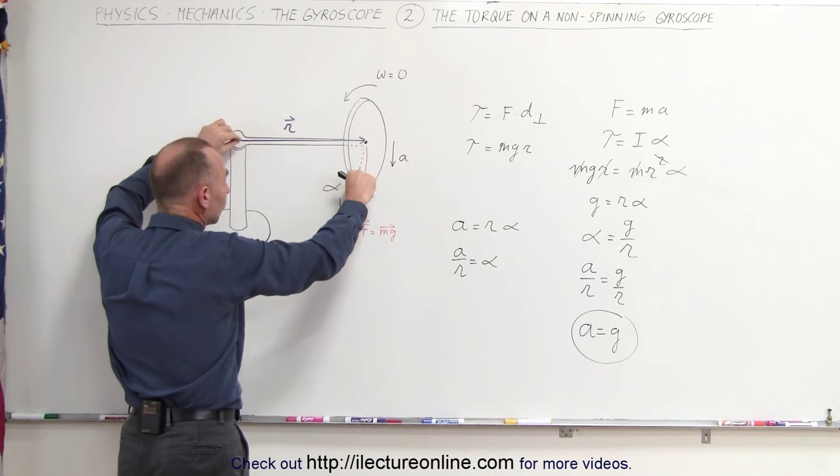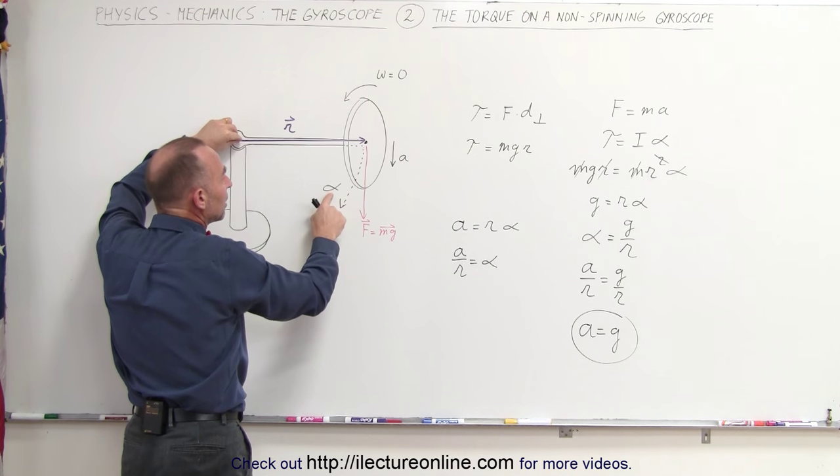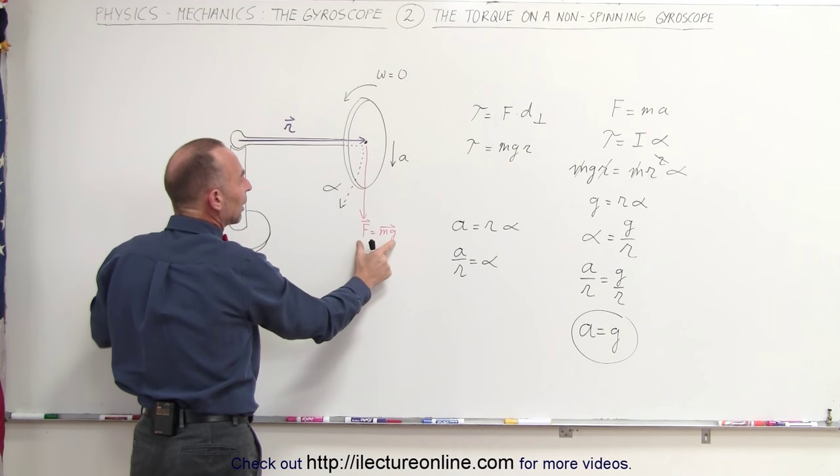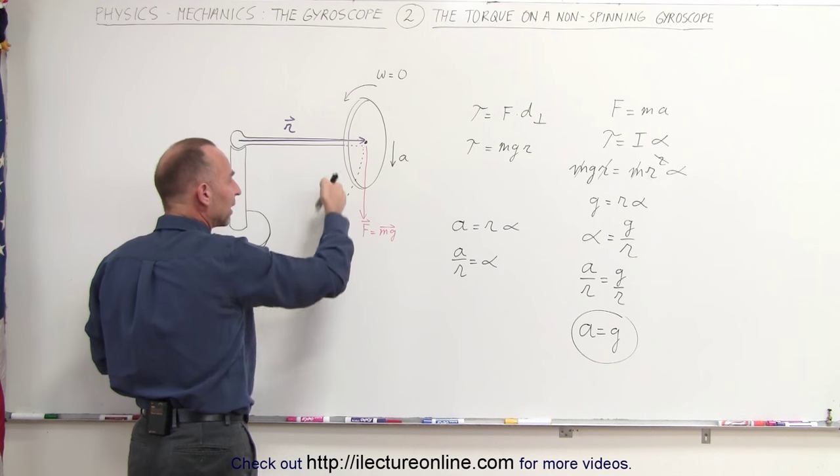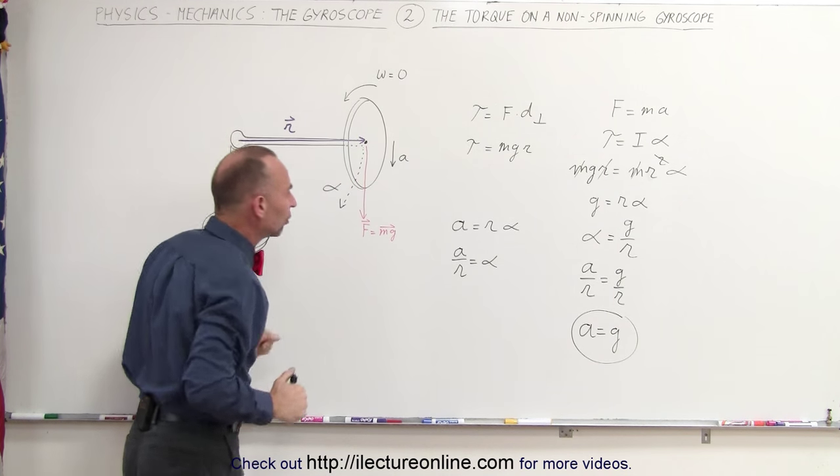as the gyroscope begins to spin around, because it's locked in right here, then the acceleration would indeed be relative to the alpha which would change. It would not stay a constant alpha, and that would depend upon the force acting in this way and then the distance from here to the line of action of the force.